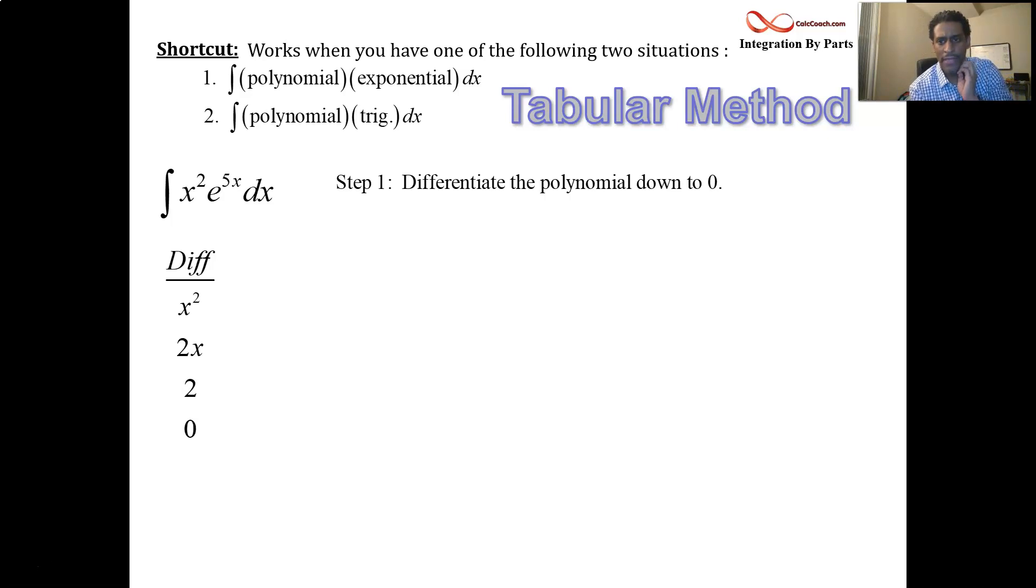Step two. Our job then is to integrate the trig function or the exponential function the same amount of times. Here's the exponential function. So one time through, you get 1 fifth e to the 5x. Another time through, you get 1 over 25 e to the 5x. One more time to match up with the same amount of times. 1 over 125 e to the 5x.